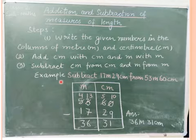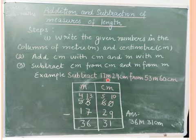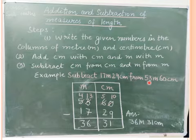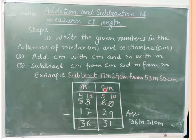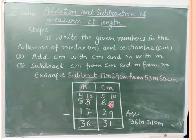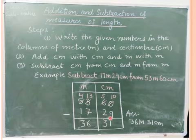Let's try to solve this example. Subtract 17 meter 29 centimeter from 53 meter 60 centimeter. First we make our column meter and centimeter. 53 meter and 60 centimeter and 17 meter and 29 centimeter.